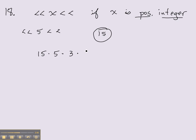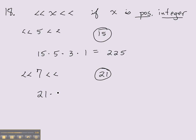Now we're asked to do 7. Three times 7 is 21, so we're looking for all the factors of 21: 21, 7, 3, and 1. And 21 times 7 times 3 times 1 is 21 squared, which is 441. That's the correct answer.